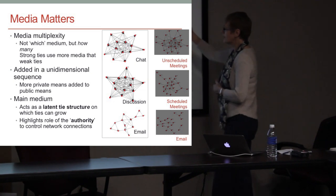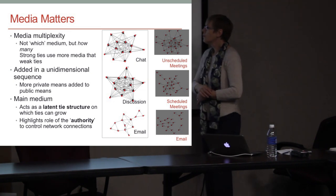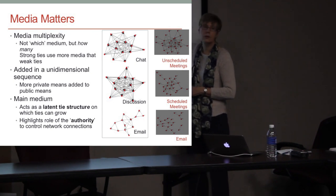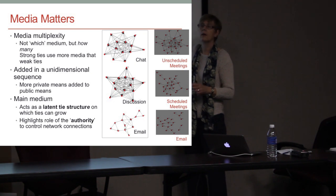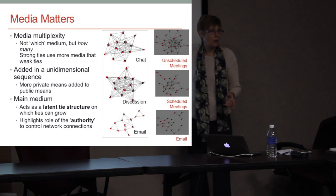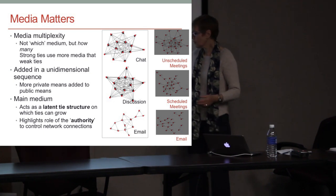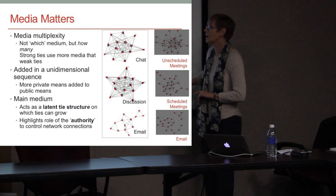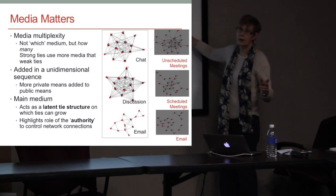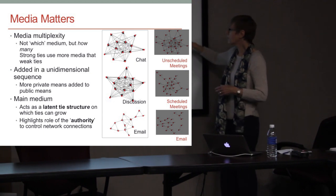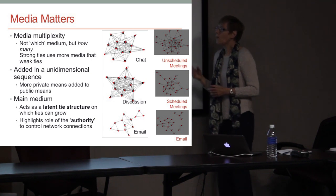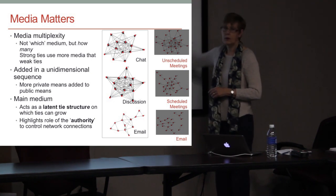From an online class: the chat was the way for the live session each week, the discussion was what went on over the week, and email was optional. For a face-to-face group: unscheduled meetings are anytime you meet in the hall, scheduled meetings are like research groups, and then email. What I found is that they run on a unidimensional scale — if stronger ties use more media, they're using this one, and this one, and this one, stacking them up. If you're a weak tie, you're only using one.